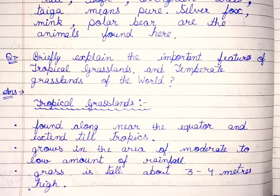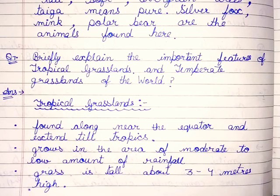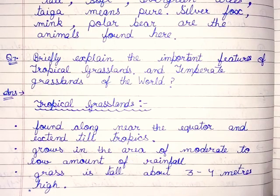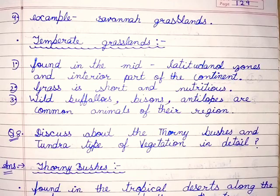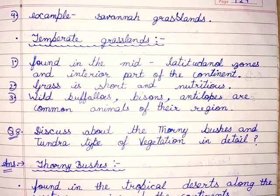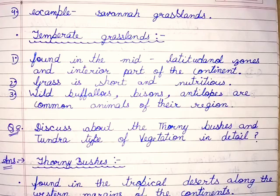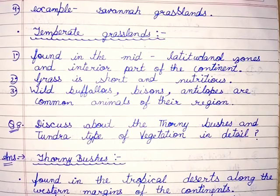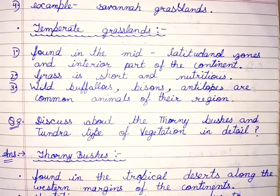Question number 7: briefly explain the important features of tropical grasslands and temperate grasslands of the world. Tropical grasslands are found near the equator and extend till the tropics. They grow in areas of moderate to low rainfall. Grass is tall, about 3 to 4 meters high. Example: savannah grasslands. Temperate grasslands are found in the mid-latitudinal zones and interior parts of the continent. Grass is short and nutritious. Wild buffaloes, bison, and antelopes are common animals of this region.